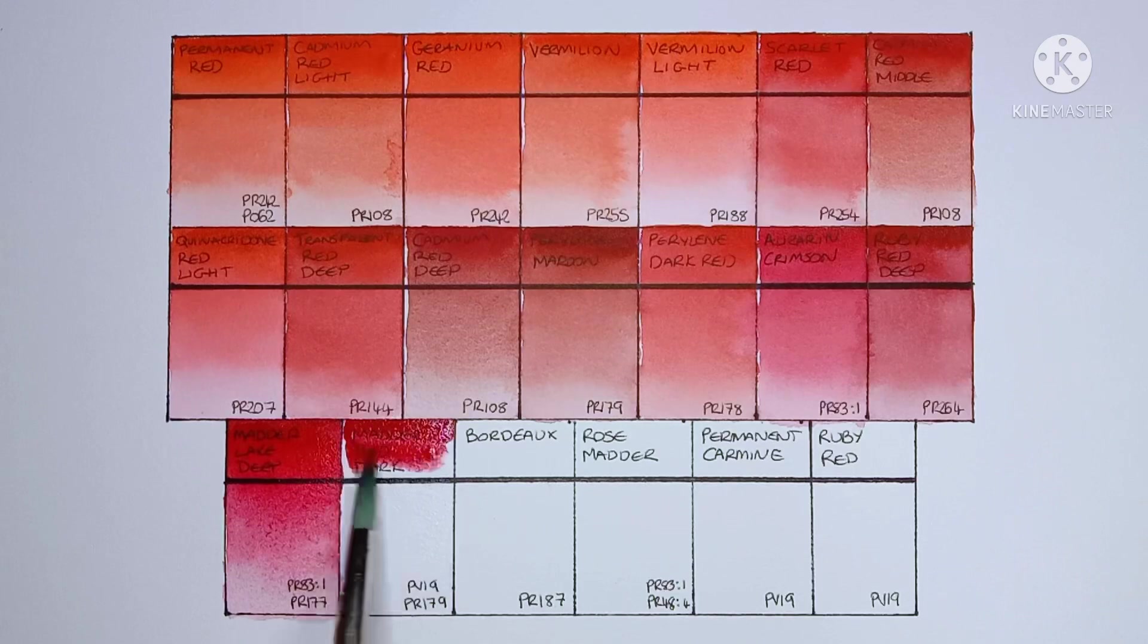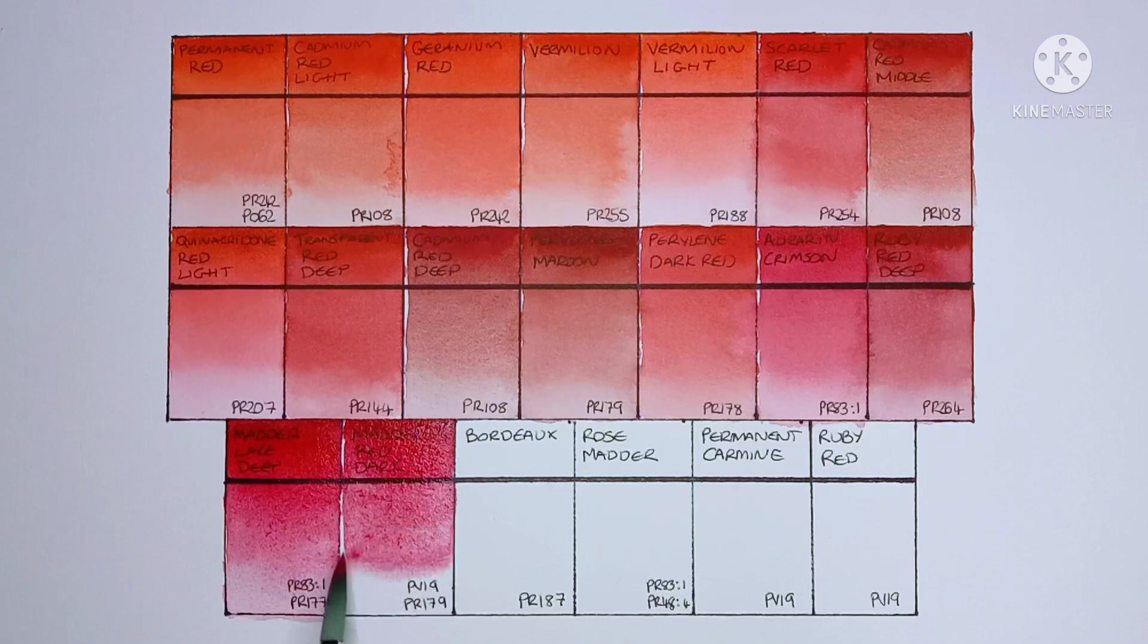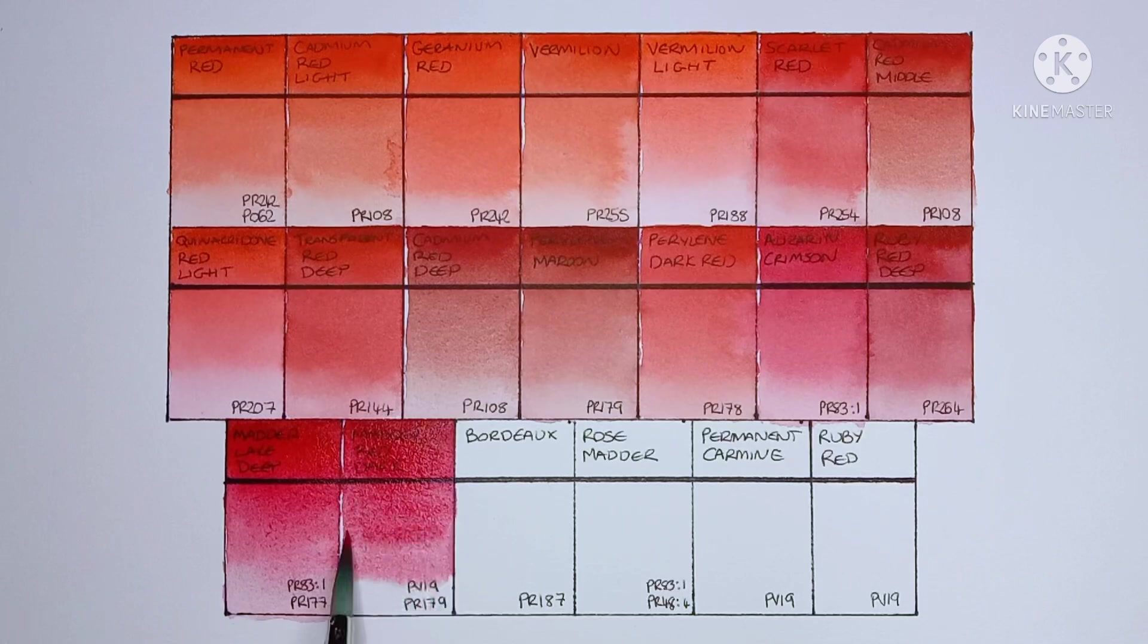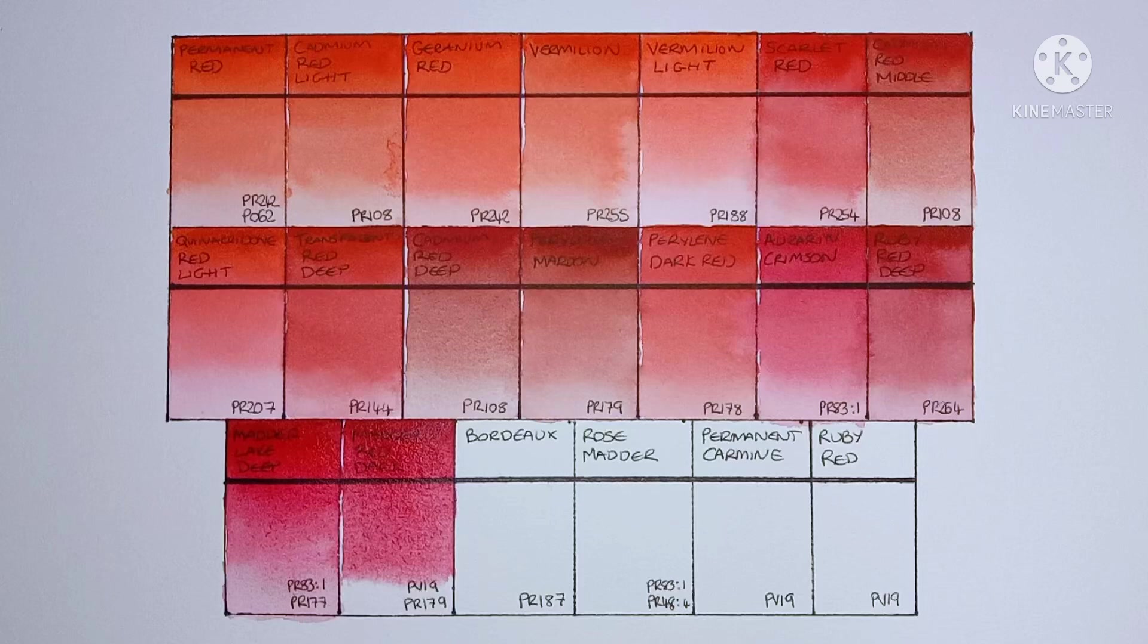Next we have madder red dark, and it's a mix of PV19 and PR179. I guess this is a more lightfast version of the previous paint. Yeah, it looks okay, but it's nothing particularly special in my opinion.